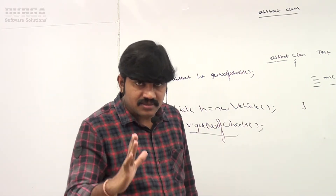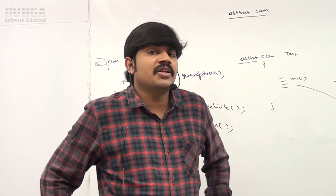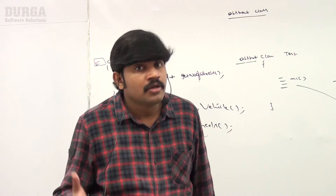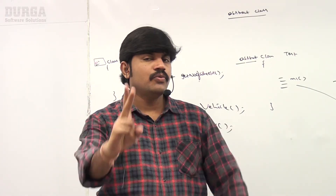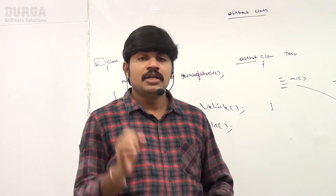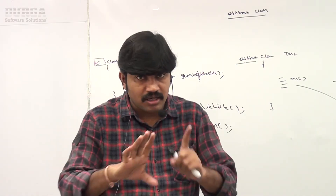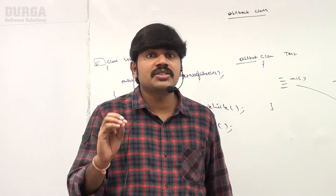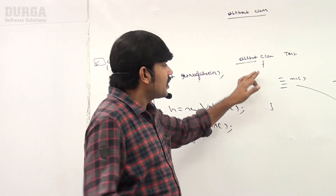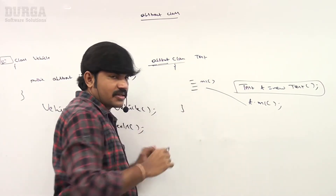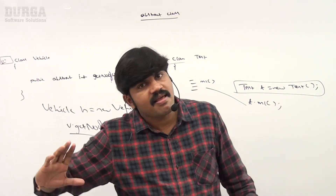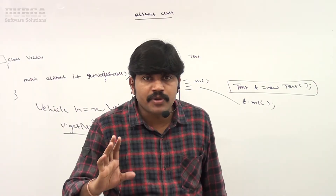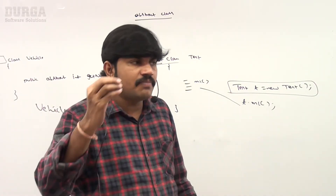For abstract classes, object creation is not possible. Only two points you should be aware of: what is an abstract class — a partially implemented class is called an abstract class. For abstract classes, instantiation is not possible. If any person tries to create an object for an abstract class, the compiler will immediately give an error. Let me show this small example.